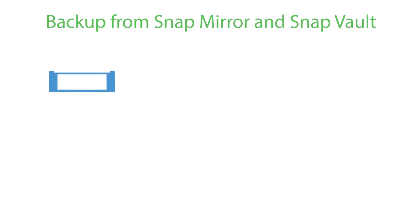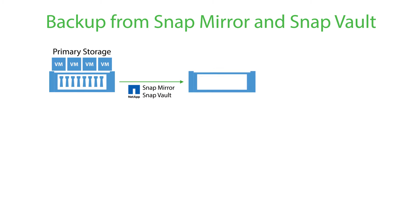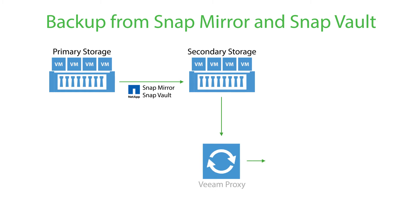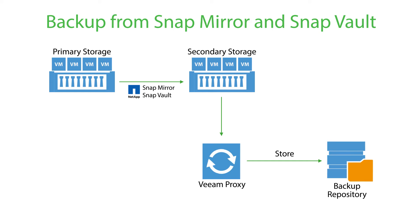The latest Veeam Availability Suite version 9 brings even more value to Veeam and NetApp customers. With version 9, you can back up directly from secondary targets such as SnapMirror and SnapVault. That means you can take backups anytime, even during production hours, with zero performance impact on your production environment.